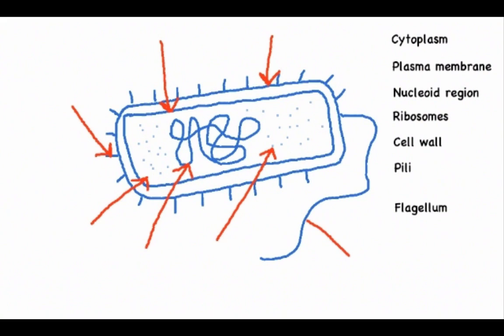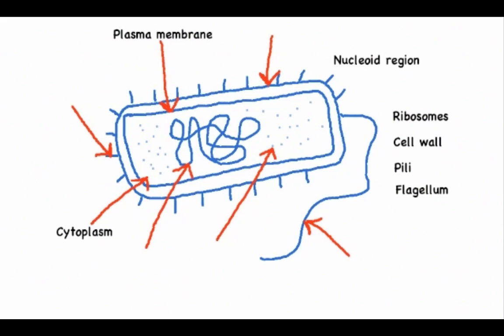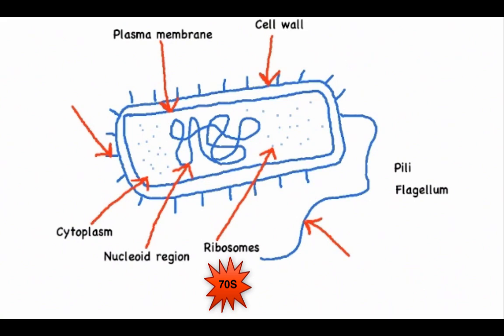So here are my arrows and we're going to label them one by one. We'll start with the plasma membrane, which is the inside layer inside the cell wall that we'll label in a minute. The cytoplasm is the liquid portion inside the cell that contains the organelles. You have the nucleoid region, which has the genetic material. Ribosomes are the dots for protein synthesis.